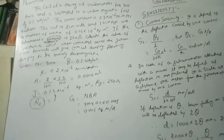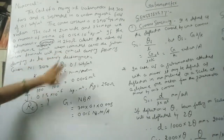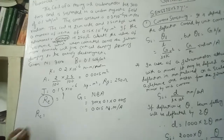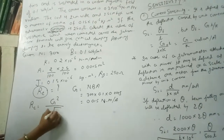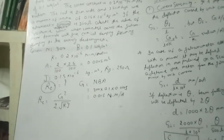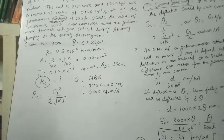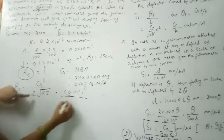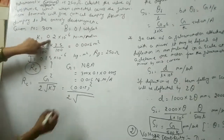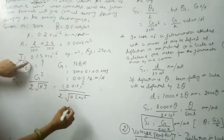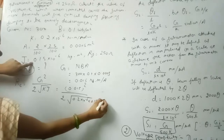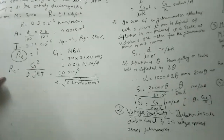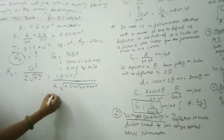Now G has been calculated. So you have to find the total critical damping resistance RC. As derived in the previous lecture, RC = G² / (2√(KJ)). Put in all given data: G = 0.015, K = 0.2 × 10⁻⁶, J = 0.15 × 10⁻⁶. From this, RC = 650 Ω.